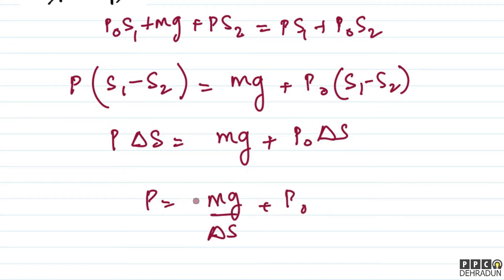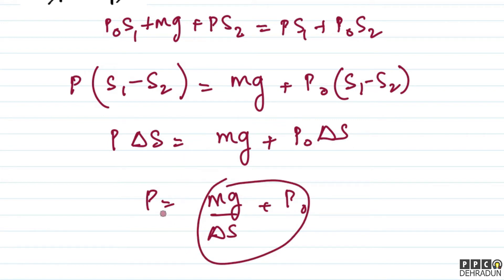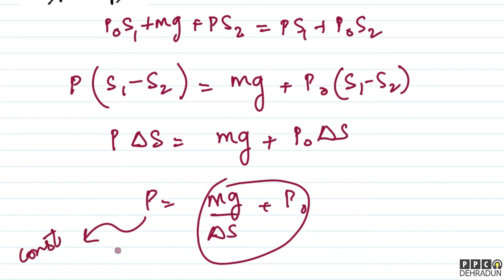Now, when we heat the gas, M, g, ΔS, and P₀ — none of these change. So if this process is quasi-static and the system remains in equilibrium at all times, then since all terms on the right side are constant, the gas pressure P must remain constant throughout. That means this process is isobaric.